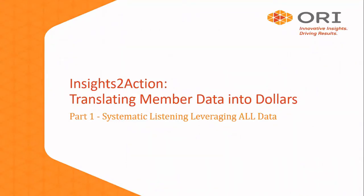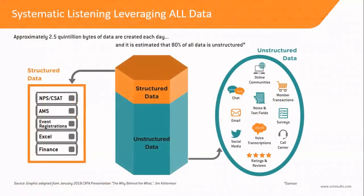So first off, what do we mean by systematic listening? As the hexagon in the middle of this slide would suggest, there is structured and unstructured data. The structured orange top part of the hexagon covers things like net promoter score, customer satisfaction score, transactional data that might be in your AMS — anything that fits in a nice Excel spreadsheet, rows and columns. That's the type of data we've typically analyzed and been able to make good use of.